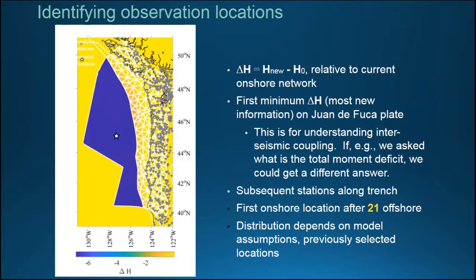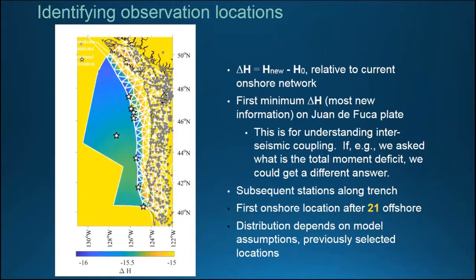This shows how much entropy decreases — how much we have learned — as a function of new observations. Blue is a big decrease in entropy; that's good, we've learned a lot. The triangles are the existing onshore GPS network. What you see is that the single most important thing you can do is go out and get a good observation of the Juan de Fuca plate, because that gives you the relative plate rate. Then it starts filling in the trench, because that's where all the uncertainty was in the coupling models. So: number one, figure out your plate rate; number two, start filling in the trench.